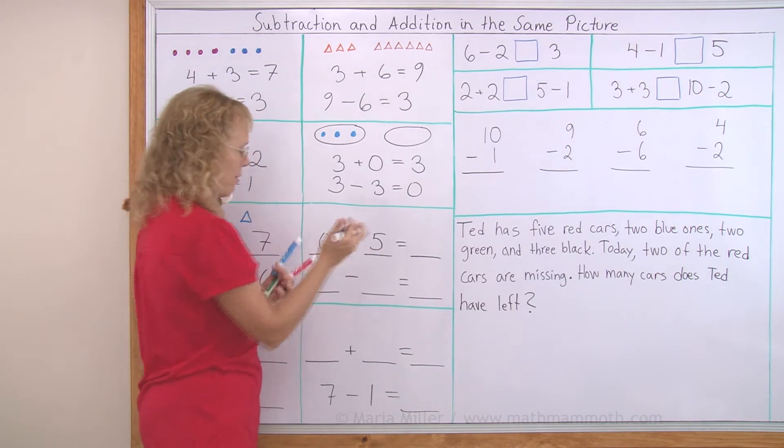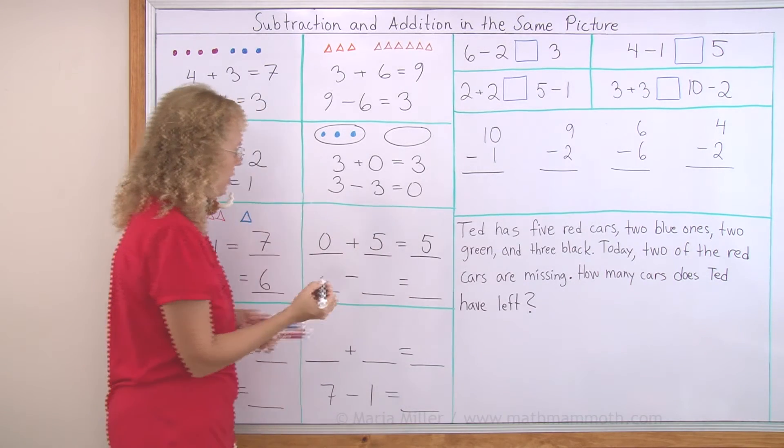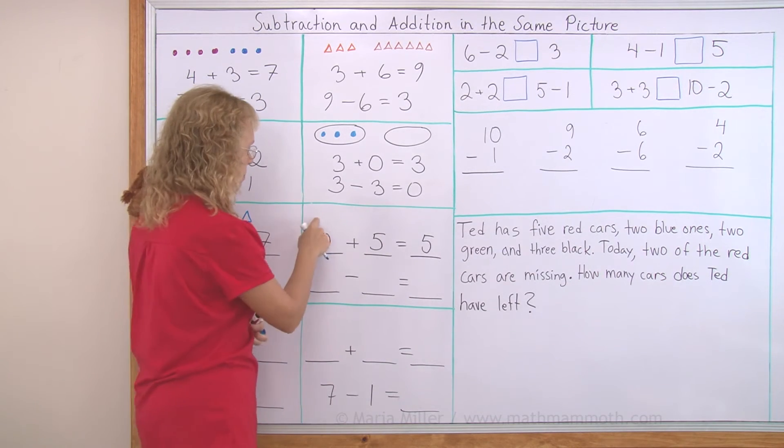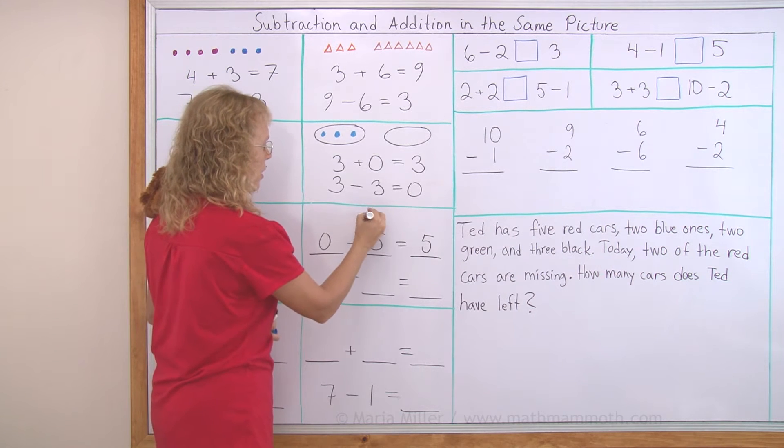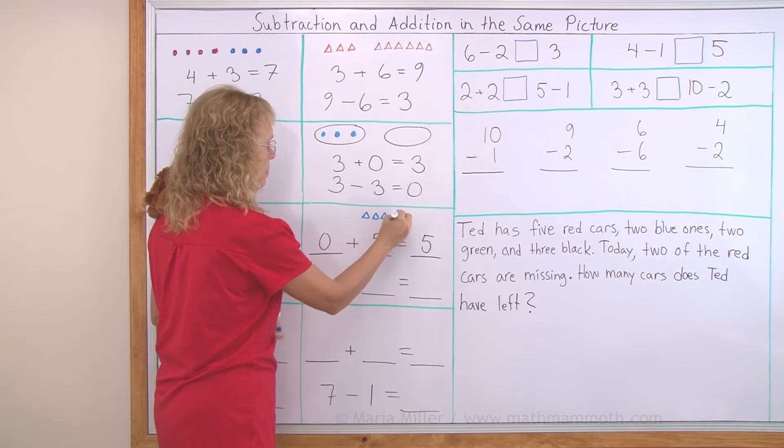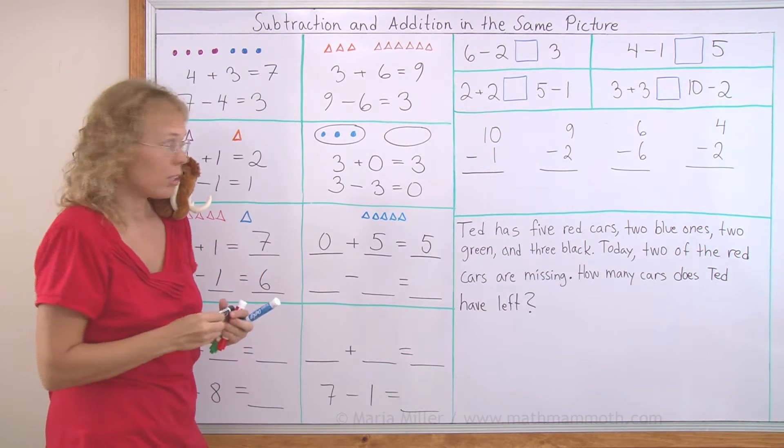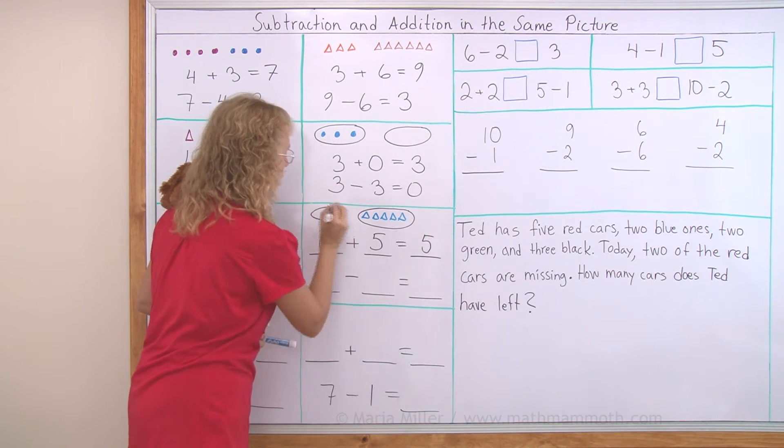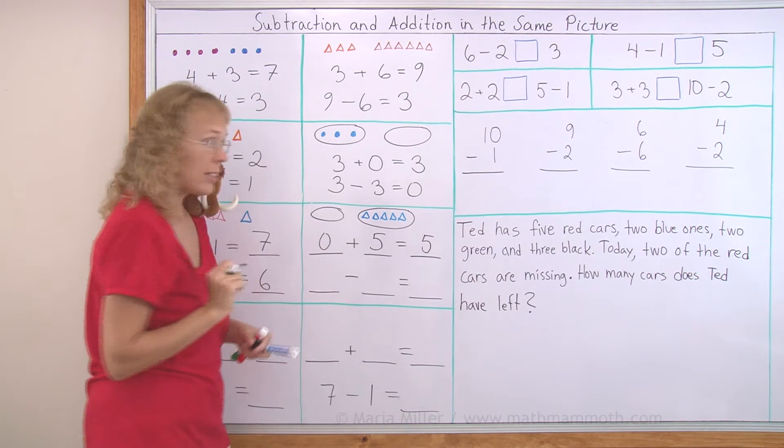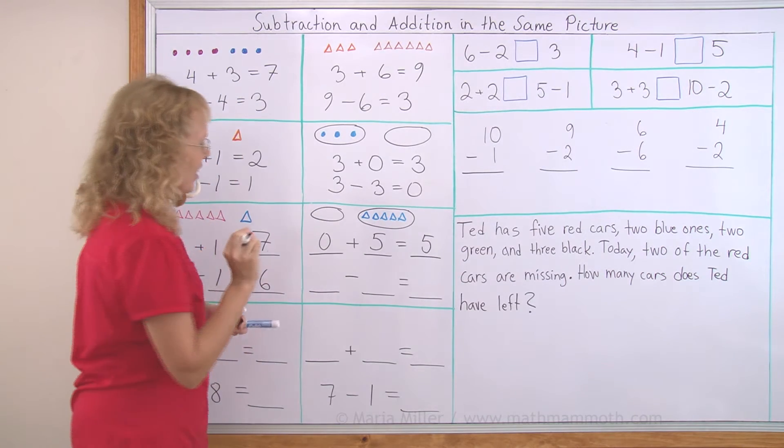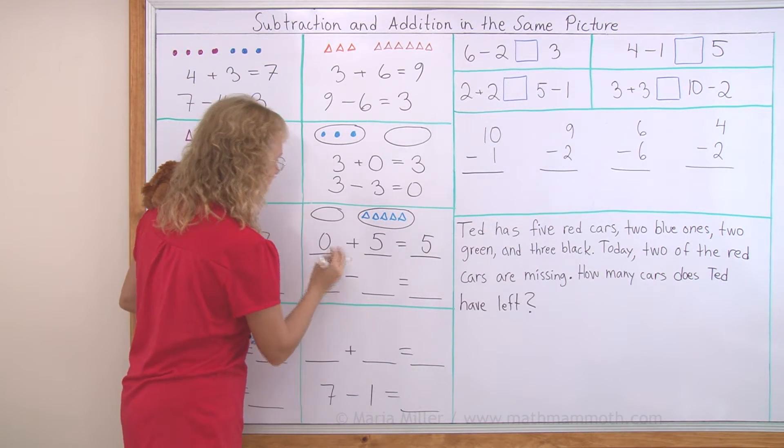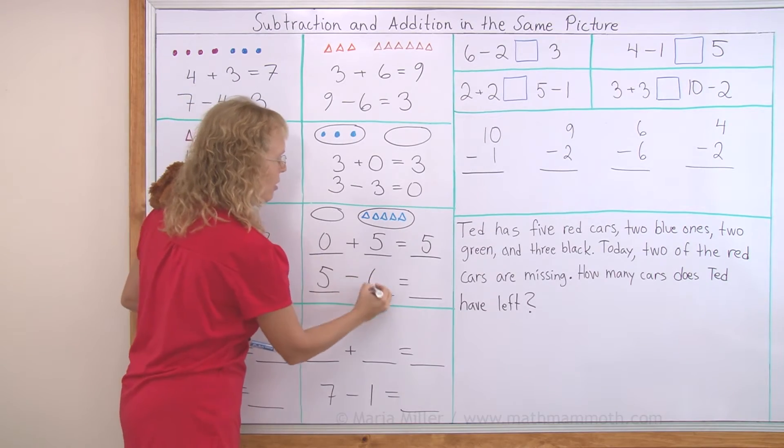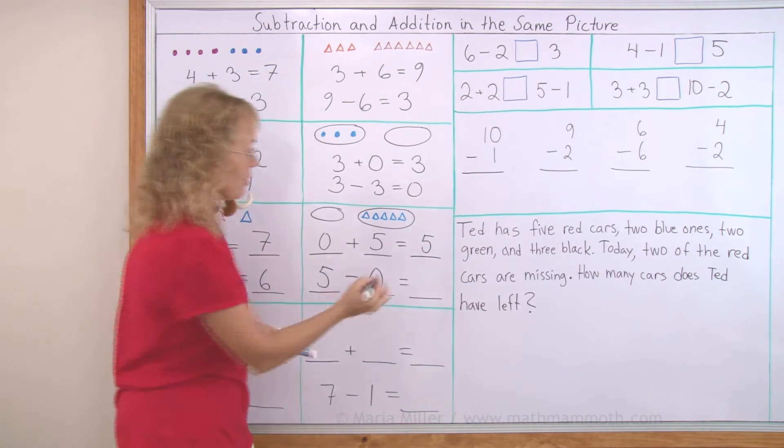0 + 5 equals, well, it equals five, right? And now let's draw something. Zero here and then five here. I'm going to draw these here to mark the groups. Zero in this group, five in that. And now the subtraction. This time we start with five and let's say that this is subtracted. Zero is subtracted. Then five are left.